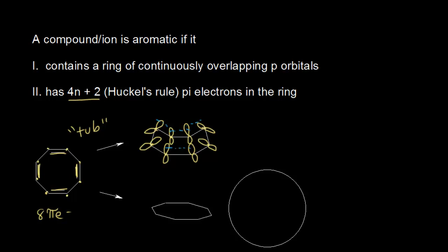This violates the first criteria for a compound to be aromatic. Therefore, we say that cyclooctatetraene is nonaromatic — it does not have a ring of continuously overlapping p orbitals, because the p orbitals don't overlap very well in the tub conformation.